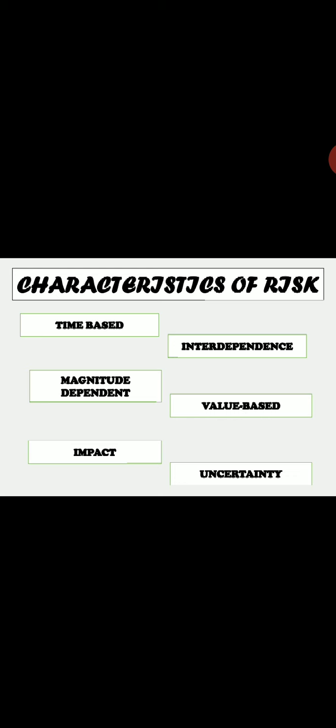The next feature is magnitude-dependent. The relationship between probability and impact is not linear in risk. The magnitude of the risk makes a lot of difference. For example, consider the risk of spending $1 for a 50-50 chance to win $5, versus spending $1,000 for a 50-50 chance of winning $5,000. The probability of loss is the same — 50% in both cases — but the opportunity cost of losing is much greater in the latter case.